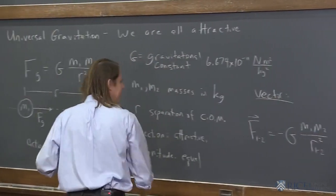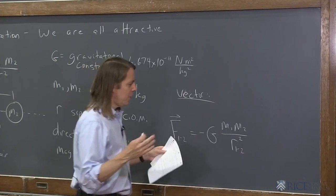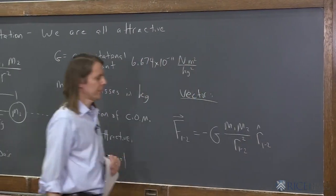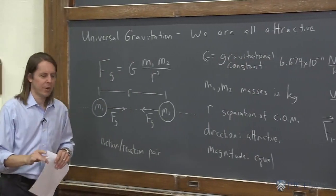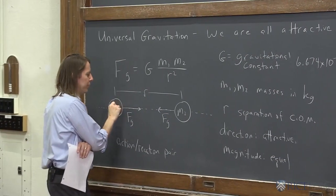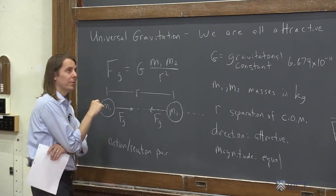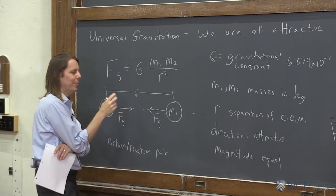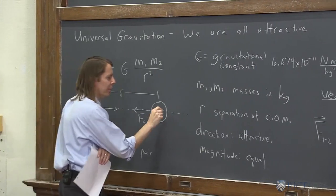Squared, of course. I did square it over here. Yeah. Squared. And now we need the unit vector r̂_12. That gets you the direction, right? So what this means is the force on 2 due to 1, the vector r_12 goes from 1 to 2. The unit vector r̂_12 is 1 in that direction from 1 to 2 with a magnitude of 1.